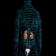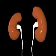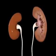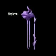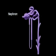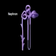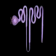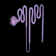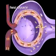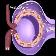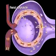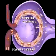Kidneys are bean-shaped organs which filter blood to regulate levels of waste, water, and salt in body fluids. The nephron is the kidney's functional unit. In its first section, the renal corpuscle, filtration occurs as fluid and small molecules in blood are filtered from glomerular capillaries.